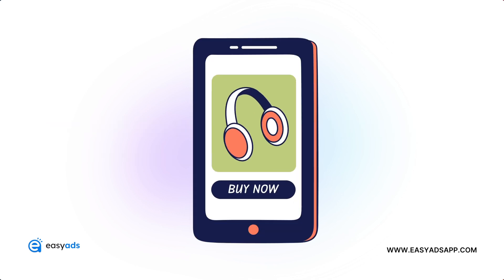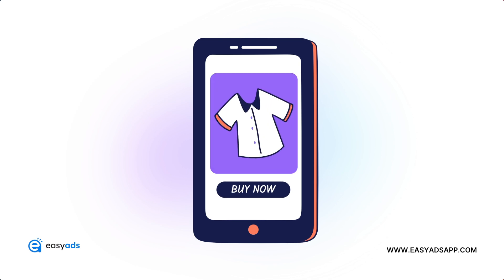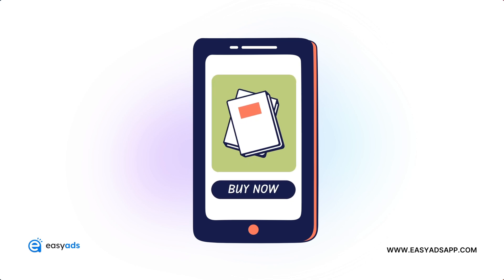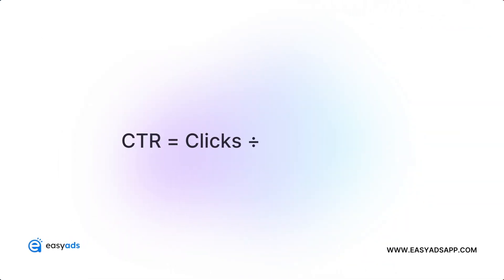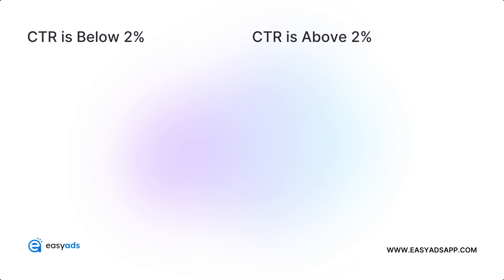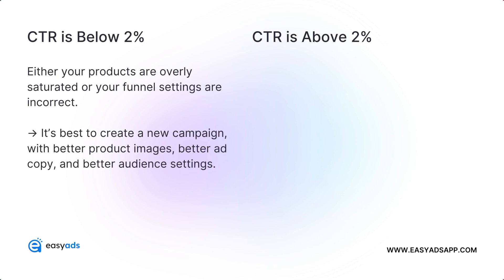Why do we focus on the CTR and not on impressions, for example? The reason is a click translates into a great deal of interest. You wouldn't click on an ad that you're not interested in — instead, you would just scroll past it and ignore it. That's why your CTR equals the total amount of clicks divided by the total amount of impressions. An ideal CTR is 2%. Below 2% is considered bad, above 2% is considered good. If your CTR is below 2%, it means that either your products are overly saturated or your funnel settings are incorrect.